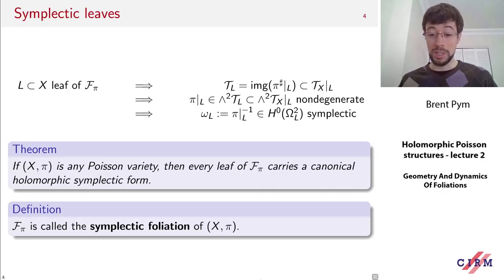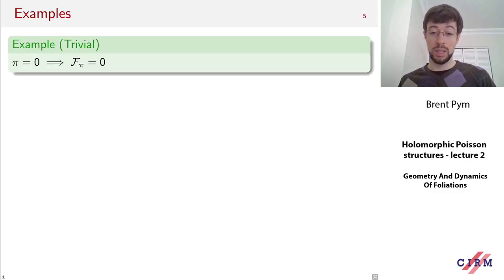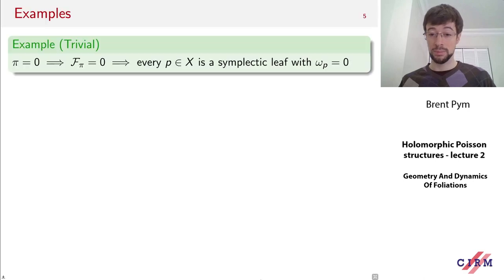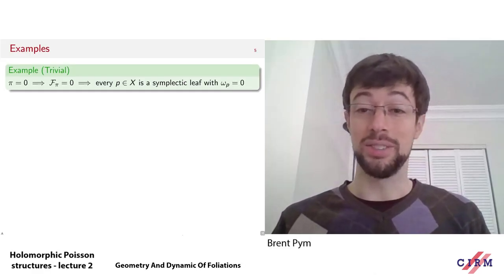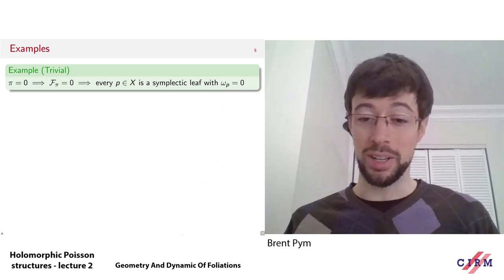This is perhaps the most dominant feature of the geometry of any Poisson manifold. The simplest example is the case where the Poisson bivector is identically zero. In that case, all Hamiltonian vector fields are also zero, so they span the zero subspace, and the foliation is completely trivial: every single point in X is its own symplectic leaf. Each point is a zero-dimensional manifold, and the only two-form on a zero-dimensional manifold is zero, so the symplectic form is just zero.